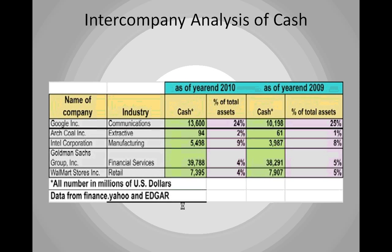We'll start with an intercompany analysis of just the cash account, looking at five different companies from five industries — all household names. You can see the importance of cash overall to the balance sheet, expressed as a percentage of total assets using vertical analysis for 2010 and 2009. These are mostly December 31st year-ends, though Intel is around December 25th and Walmart's is late January. Google, a high-tech company, has roughly a quarter of its assets in cash, while Arch Coal — an old-line company with large investments in coal reserves and mining equipment — has only 2% of total assets in cash. Goldman Sachs in financial services has only 4% of total assets in cash.